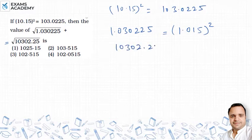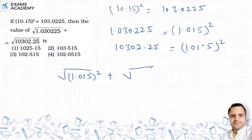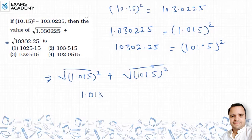Here, 10302.25 has the decimal at two places, so we shift the decimal to a single place and take its square root. Using both these values, we replace them under the square root signs. For the first under root we put 1.015 squared, and for the second we put 101.5 squared. Solving the square roots, the squares cancel and we get 1.015 plus 101.5.